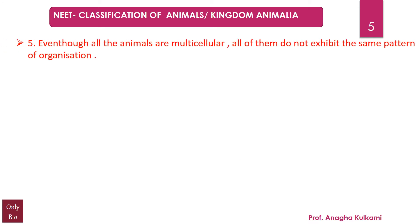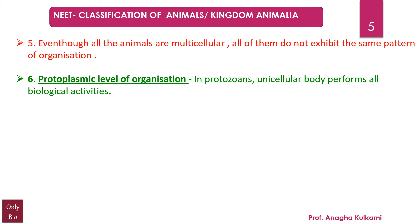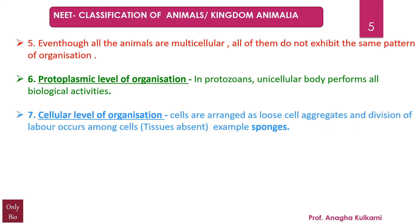Point number 5: Even though all animals are multicellular, all of them do not exhibit the same pattern of organization. Protoplasmic level of organization is seen in protozoans, wherein the unicellular body performs all the biological activities. Cellular level of organization is the one in which cells are arranged as loose cell aggregates and division of labor occurs among the cells. In other words, tissues are absent in them, and the best example is sponges.